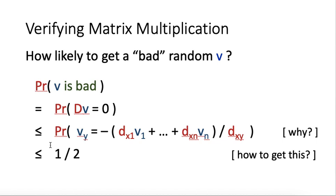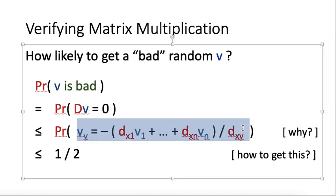Let's get back to the question how likely to get a bad random V. The chance that V is bad is the same as the chance that D times V is equal to 0. When D times V is equal to 0, we must require that the X-row of D multiplied by V is equal to 0. Apart from requiring all the remaining rows also when multiplied by V equal to 0, that's why we have a smaller than or equal to sign here. This probability just requires the X-row of D when multiplied by V is equal to 0, instead of requiring all the rows to be equal to 0. So this is easier to occur, so it has a larger probability.